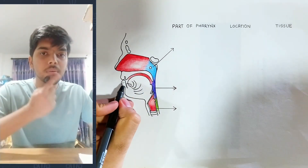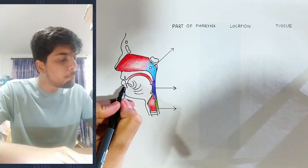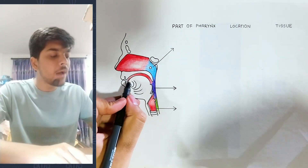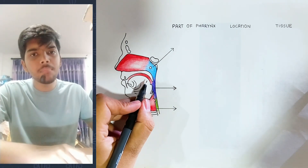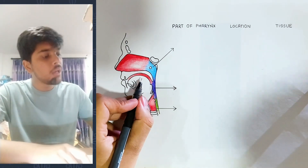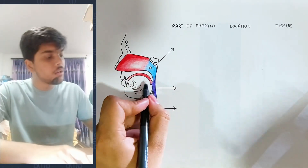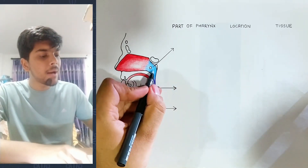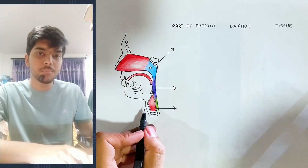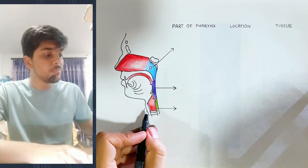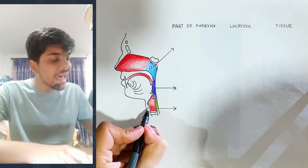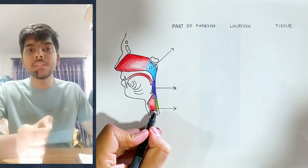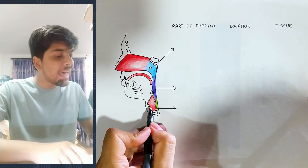The mouth cavity is called the buccal cavity or the buccal chamber. The nasal chamber and the buccal chamber connect through a pipe called the pharynx. It is called the larynx below that.